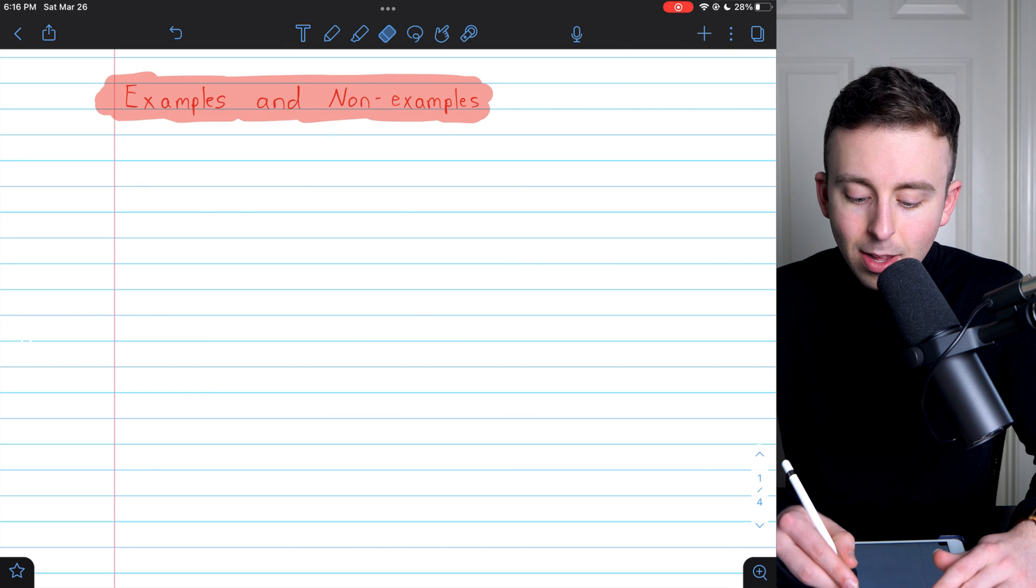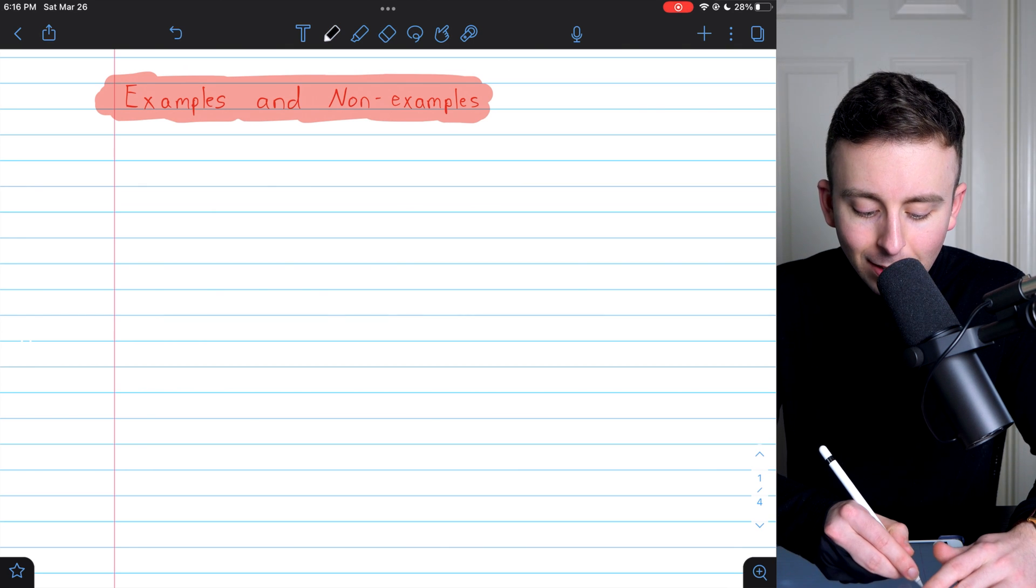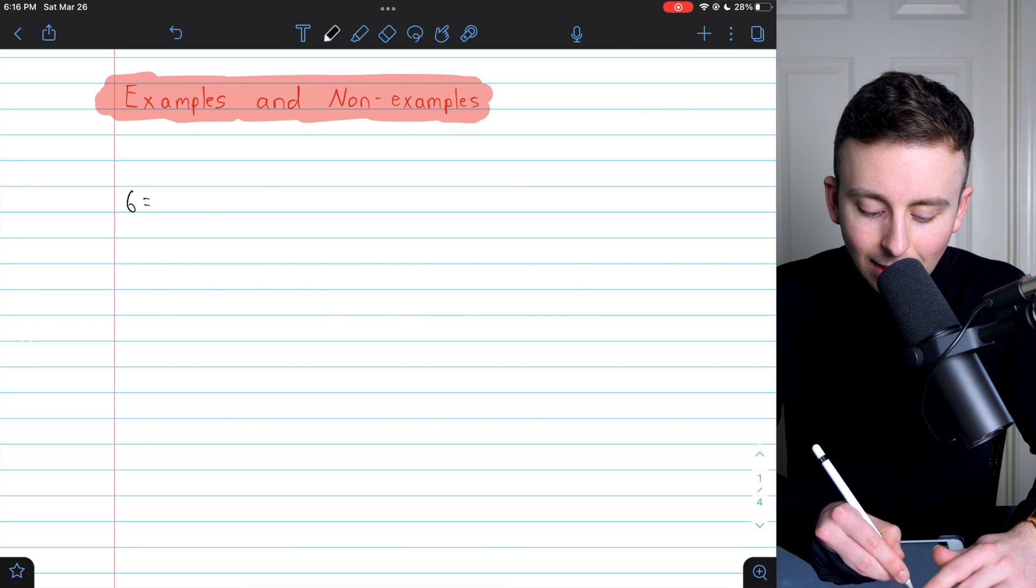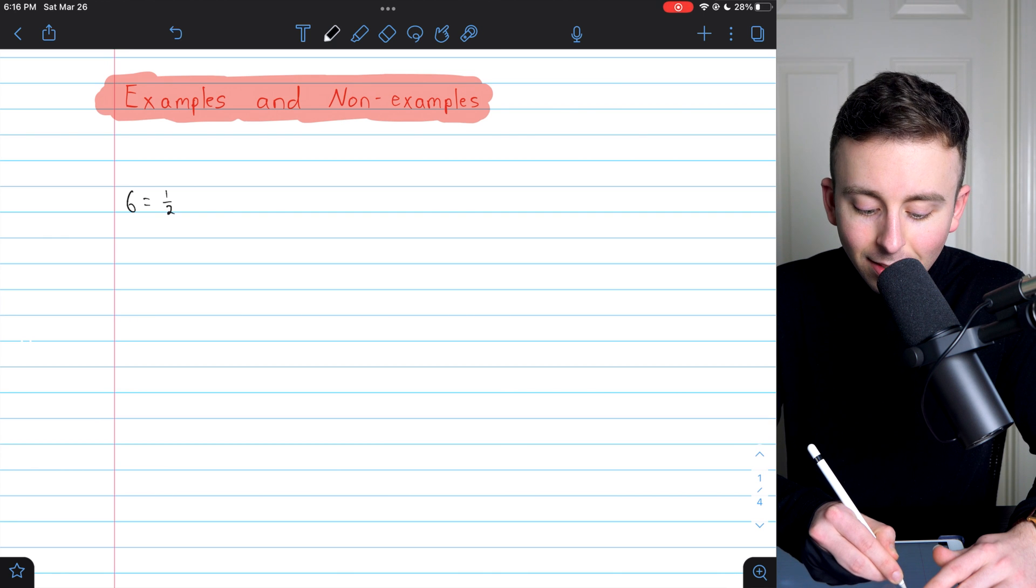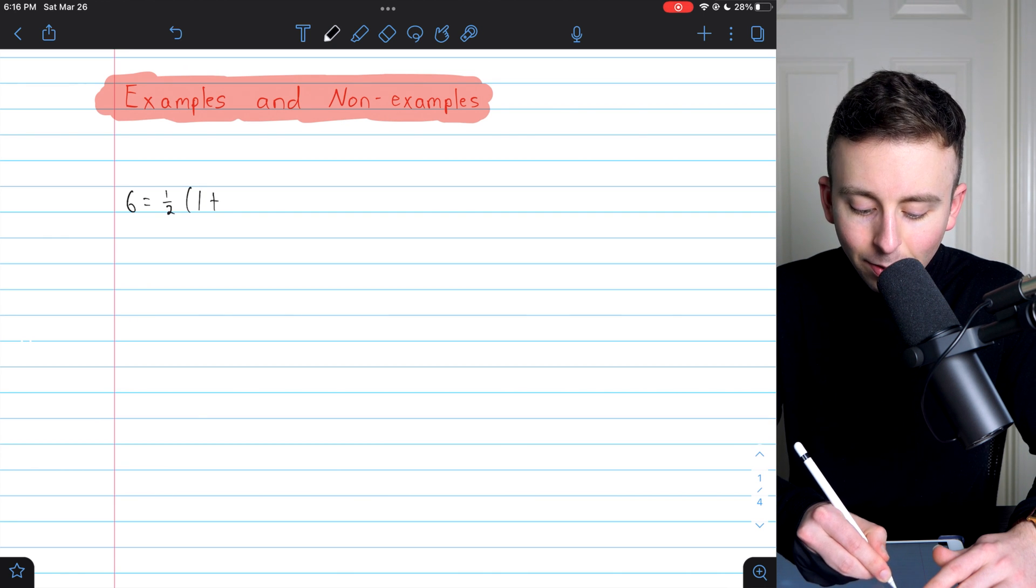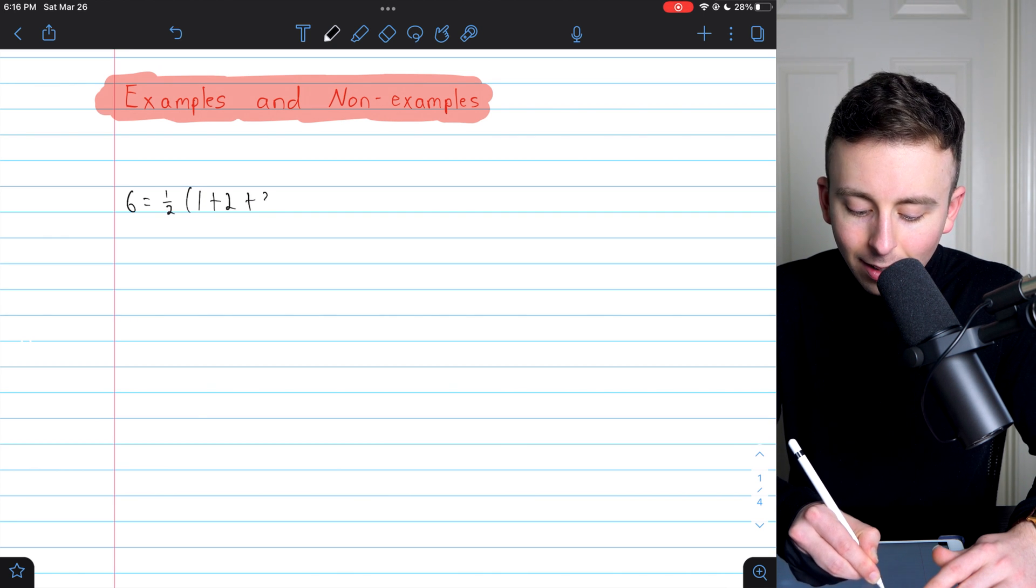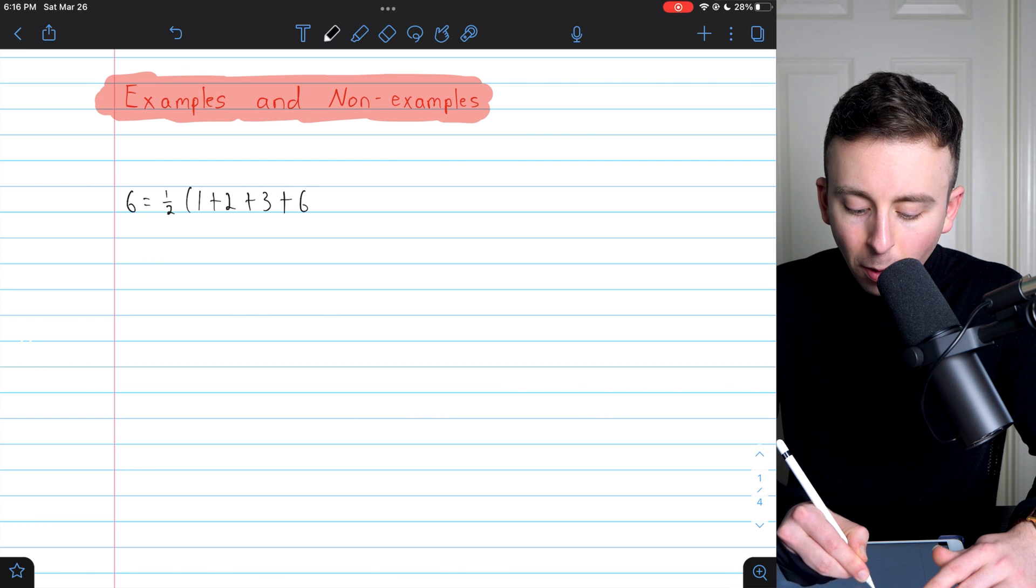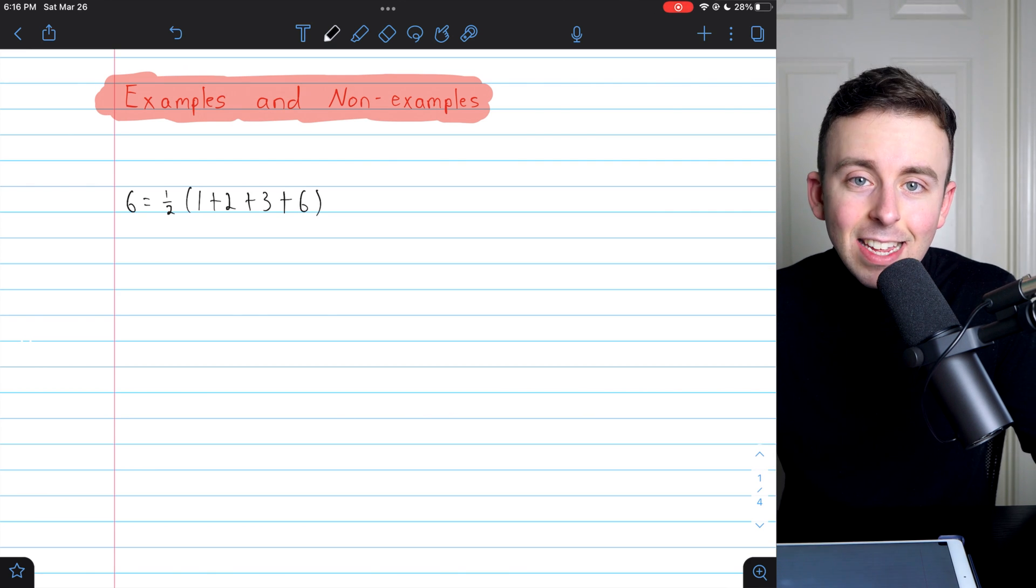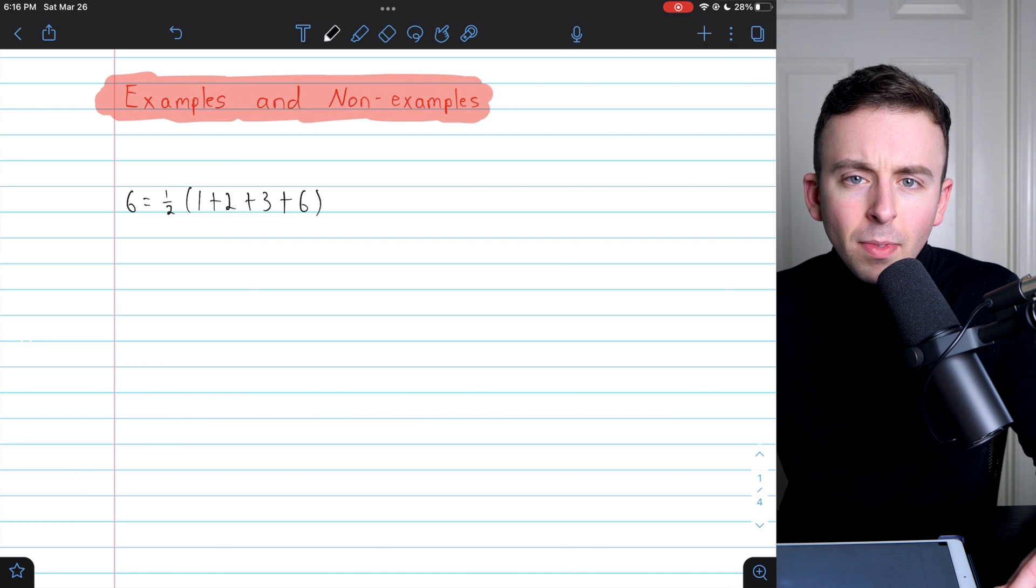Let's quickly go through the example of a perfect number we already saw. 6. 6 is a perfect number because it's equal to half the sum of its divisors. Or alternatively, it's exactly equal to the sum of its proper divisors.